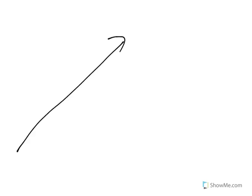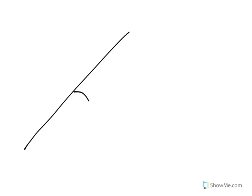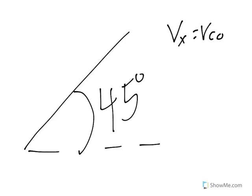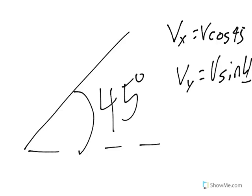It turns out that if you shoot it at a 45 degree angle, then what we end up with is vx equals v cosine 45, and vy equals v sine 45. And if we were to solve this in the calculator, we would see that vx equals vy.